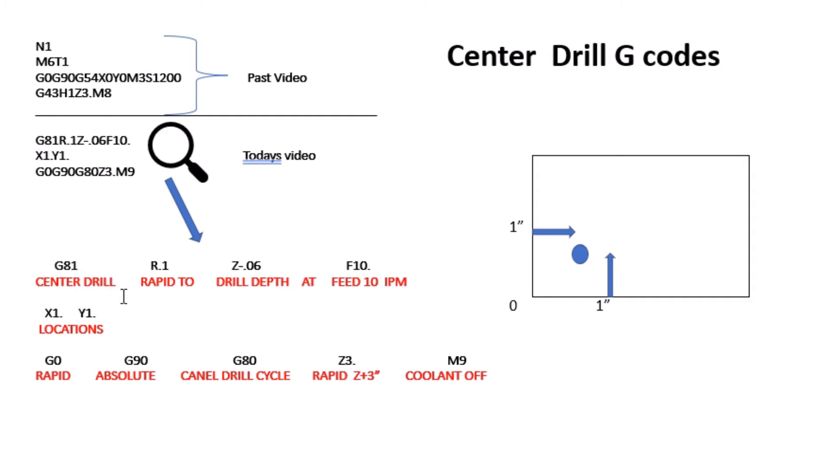The R value is your rapid-to. A nice way I always remember is rapid-to. Remember your last command here was three inches above your part from back in the video on the introduction of G code programs. Right here is rapid-to that point, so you're going to rapid from that three all the way down to one hundred thousandths above the part.